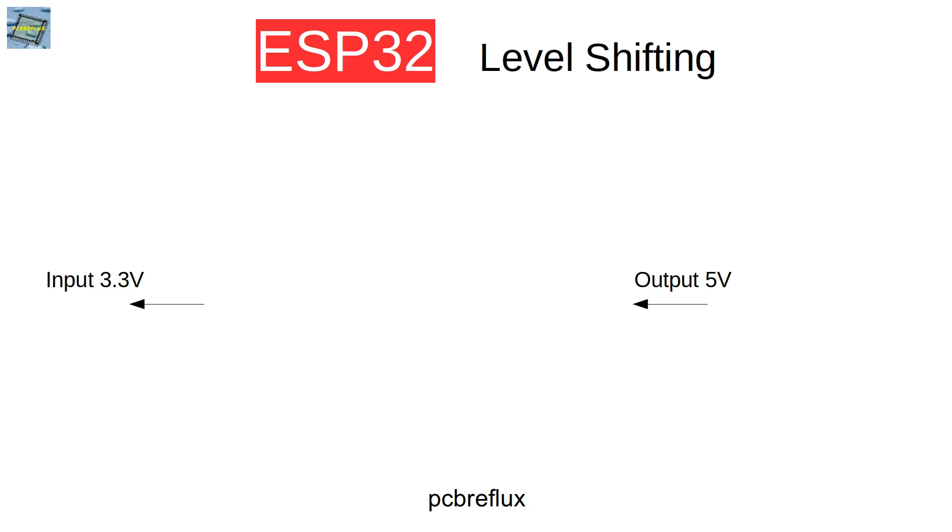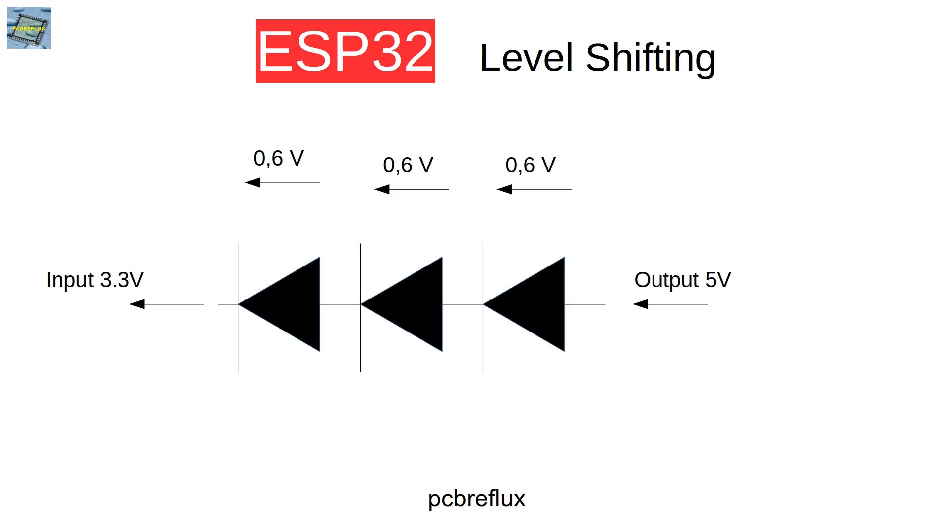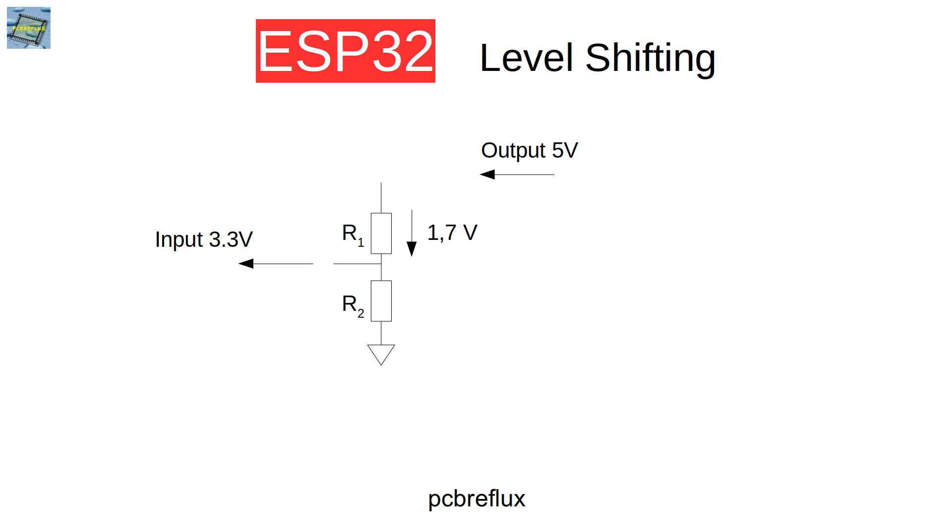First we can try to use direct the output of the 5V sensor to our ESP32 3.3V GPIO pin but unfortunately then we can destroy our GPIO pin, or we can use the voltage drop of some diodes to reduce the voltage level of our signal. But this only works in one direction and we can also try to use maybe